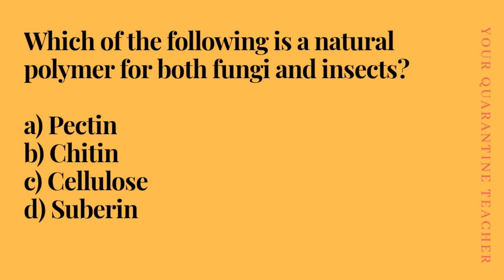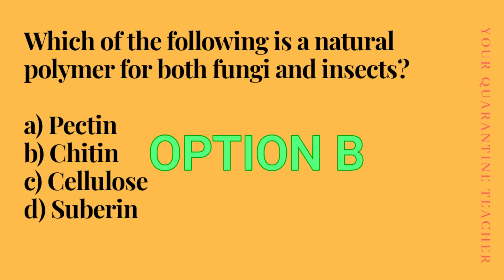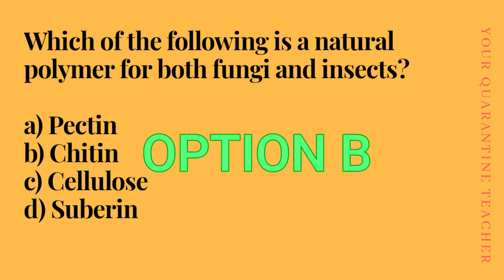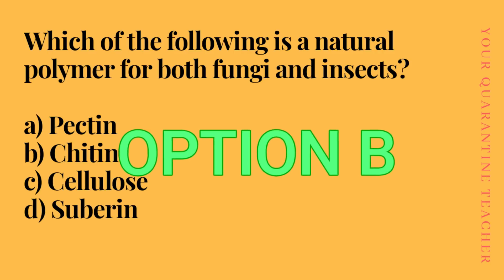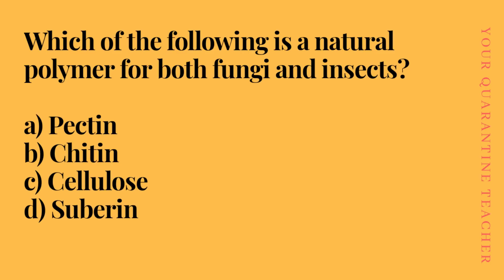Which of the following is a natural polymer for both fungi and insects? Option A Pectin, Option B Chitin, Option C Cellulose, Option D Suberin. So Option B Chitin is the correct answer. This is an important question.